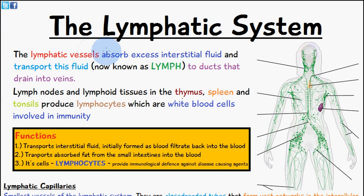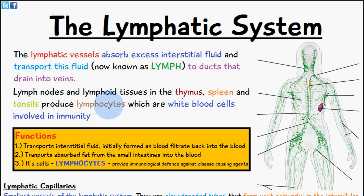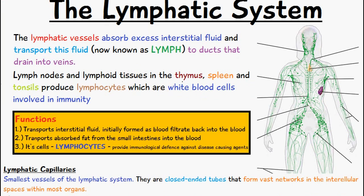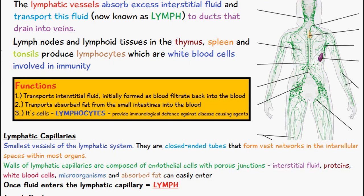The lymphatic vessels absorb excess interstitial fluid, which is the fluid around the cells, and it transports this fluid — now known as lymph — to ducts that drain eventually into veins. The lymph nodes and lymphoid tissues in the thymus, spleen and tonsils also produce lymphocytes, which are white blood cells involved in immunity. There will be separate videos relating to lymphocytes, but for now let's focus on the lymphatic vessels.